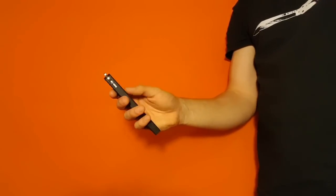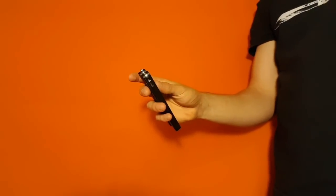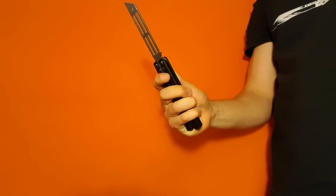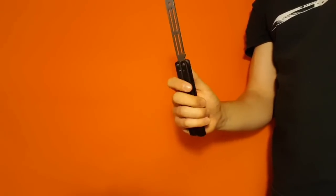Yo guys, what is going on today? We're doing a move called the modified twirl. Here is what it looks like. That's the move and here is a slow-mo.